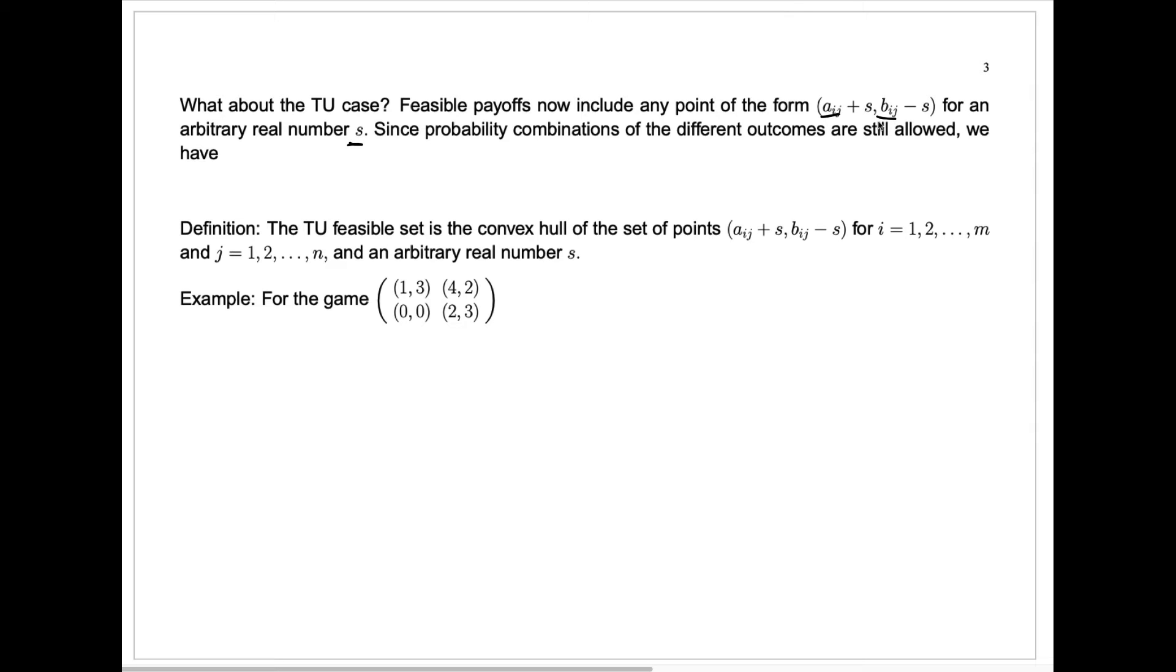Now, probability combinations or just mixed strategies are still allowed along with the side payment. So my claim is the feasible set is now the convex hull of the set of points where we're allowing all of these side payments. And let me show you how we can look at that.